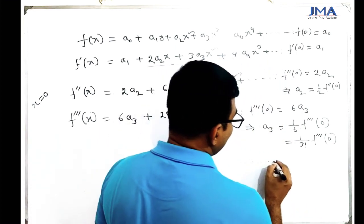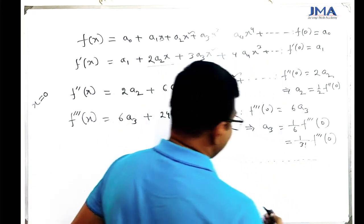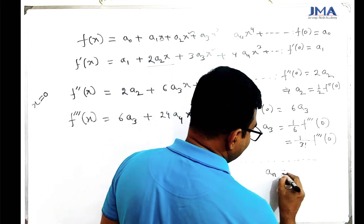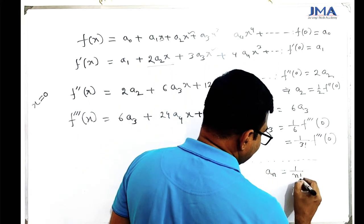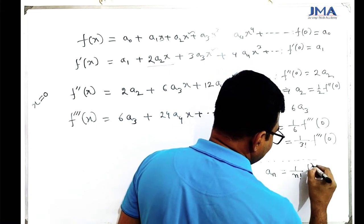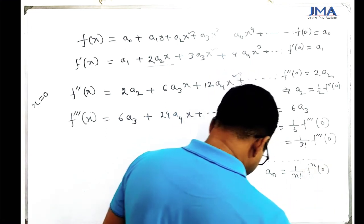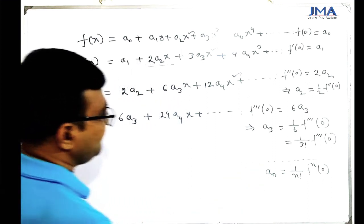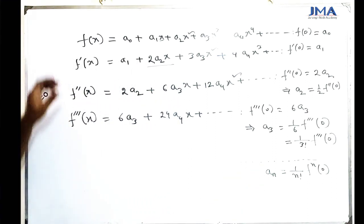Carrying on, for the nth term: an equals 1 by n factorial times f^(n)(0). This is the general formula for the coefficients of the Maclaurin series.